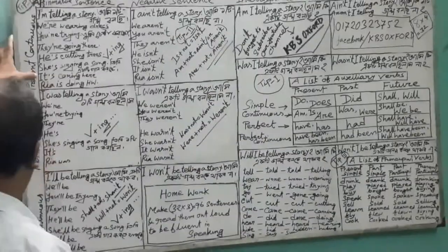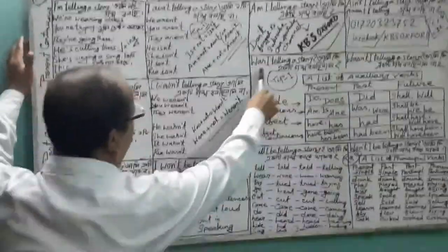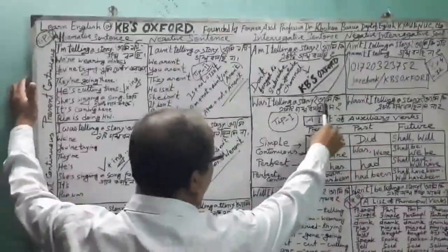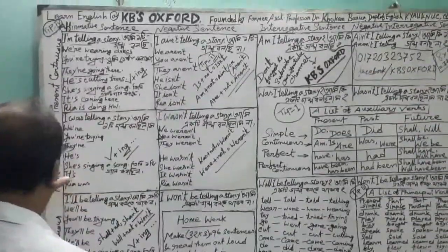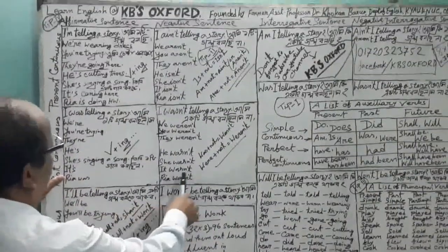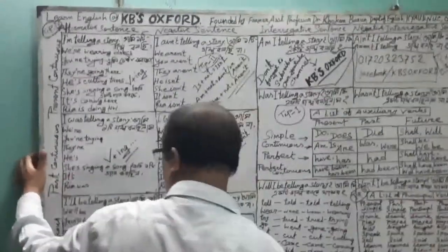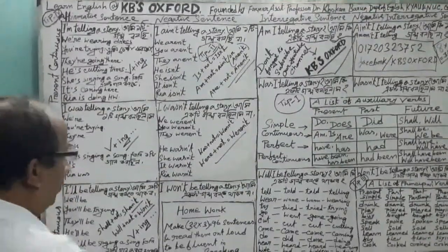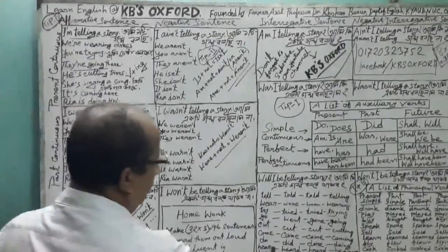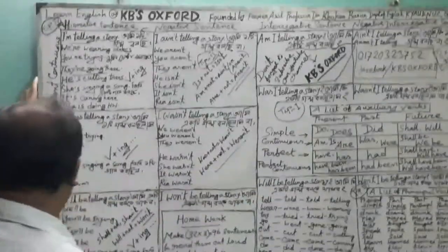Now subject 'It'. Present: It is coming here. It isn't coming here. Is it coming here? Isn't it coming here? Past: It was coming here. It wasn't coming here. Was it coming here? Wasn't it coming here? Future: It will be coming here. It won't be coming here. Will it be coming here? Won't it be coming here?